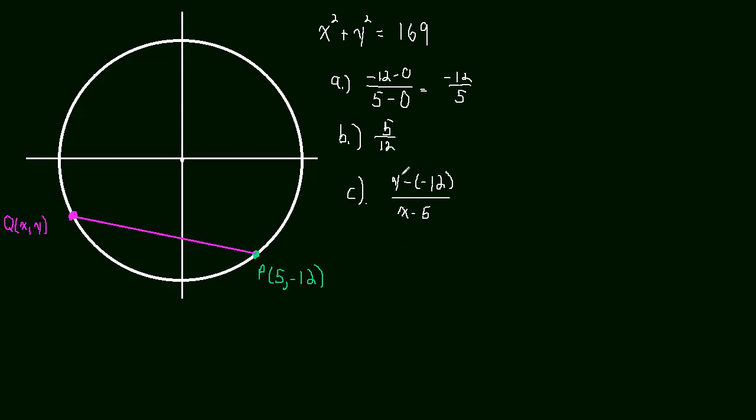But they said in terms of X. So that means this Y has got to go. We have to find Y in terms of X. And we can do that because they gave us an equation of the circle up here. So let's solve that for Y. So Y is going to be equal to plus or minus the square root of 169 minus X squared. That's what Y is equal to.